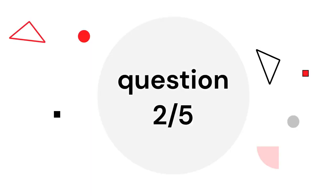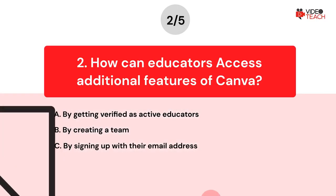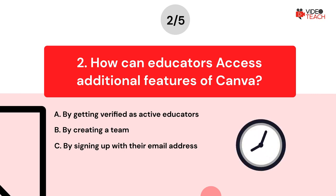Question number two. How can educators access additional features of Canva? Option A: By getting verified as active educators. Option B: By creating a team. Option C: By signing up with their email address. Now you have about 15 seconds to think about your answer.